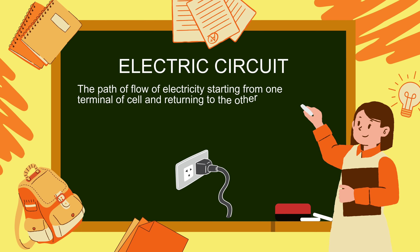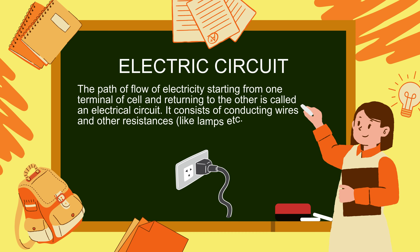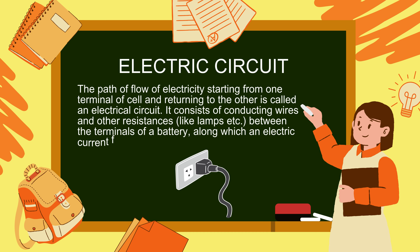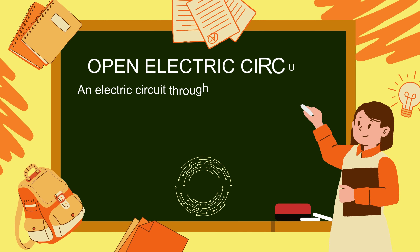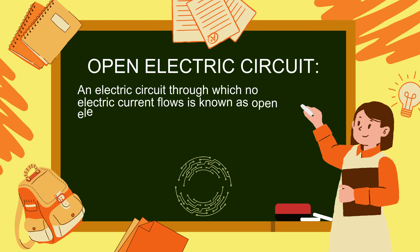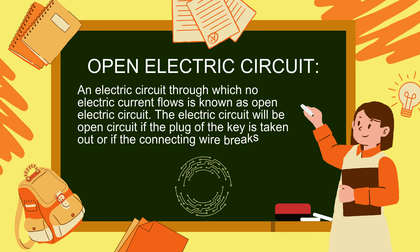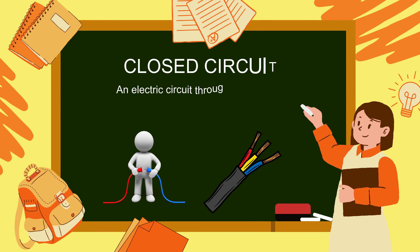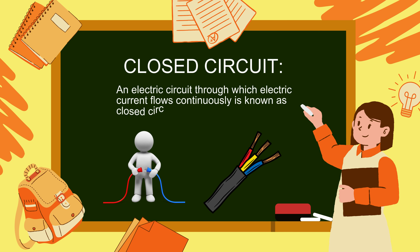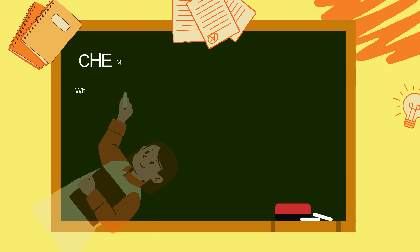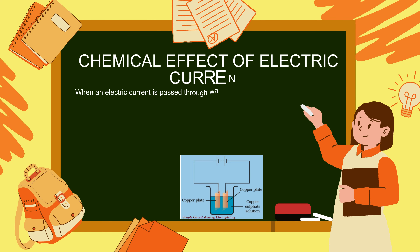Electric circuit: the path of flow of electricity starting from one terminal of a cell and returning to the other is called an electrical circuit. It consists of conducting wires and other resistances like lamps between the terminals of a battery. Open electric circuit: a circuit through which no current flows is an open circuit — this occurs if the plug or key is removed or if the connecting wire breaks. Closed circuit: a circuit through which current flows continuously is a closed circuit.